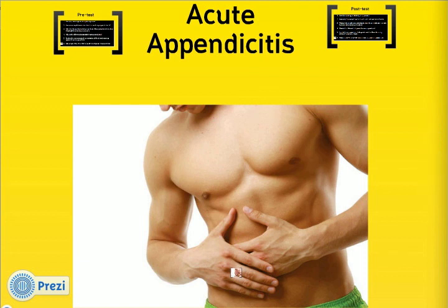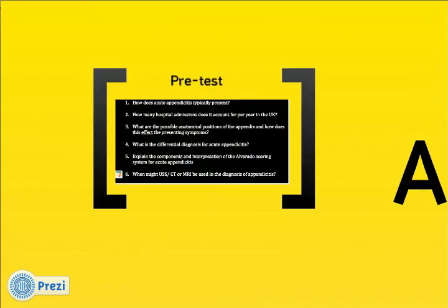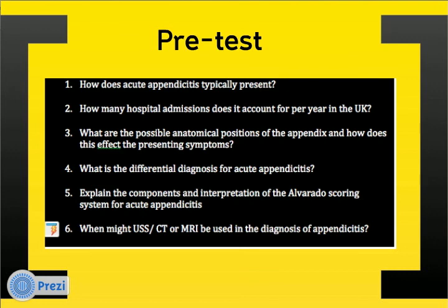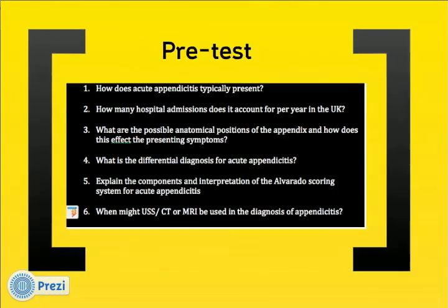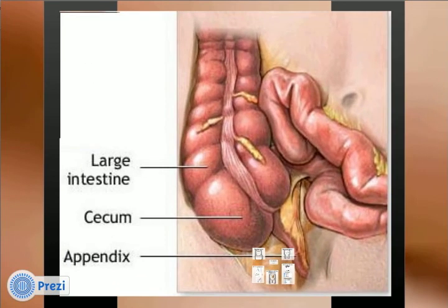This short presentation will help you in your approach to clerking a patient with acute appendicitis. You may want to pause the video now and complete the pre-test questions to assess your existing knowledge. The appendix is usually located on the posterior medial wall of the cecum, two centimetres below the ileocecal valve. This anatomical position explains its usual presentation with right iliac fossa pain.